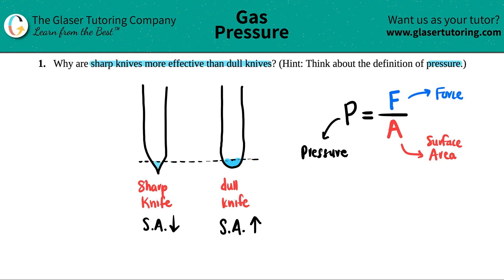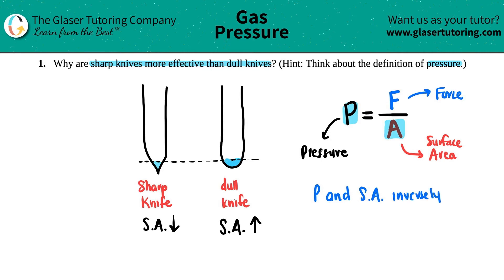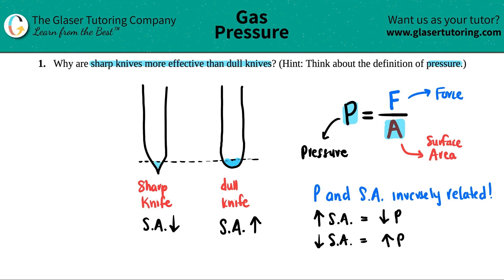Pressure and surface area are inversely related. Pressure is in the numerator and area is in the denominator — when one is in the numerator and the other in the denominator, that's always an inverse relationship. So if the surface area increases, the pressure that the knife puts out decreases. Conversely, if you have a low surface area, the pressure you can put out is higher.